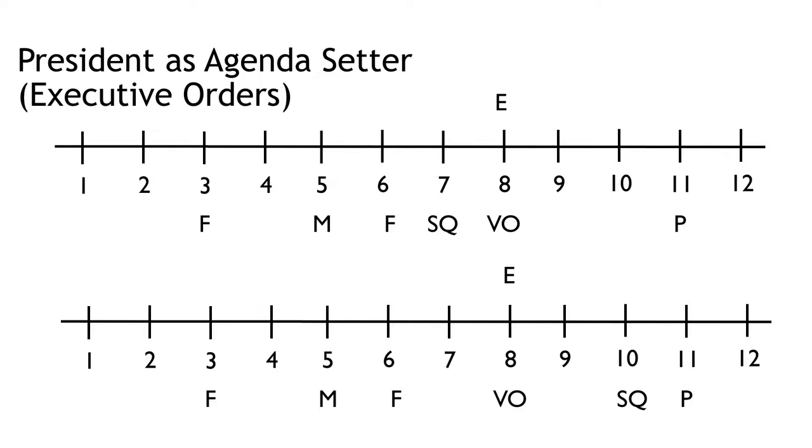In the top case, the president is moving the status quo from 7 to 8. This moves the policy closer to the president's preferred position. The president is made better off. The president, however, leaves it at the edge of the gridlock interval in order to keep Congress from passing a law that supersedes it. This is important because if the president moved the policy all the way to 11, then Congress would simply pass something that would move it back to 5, and the president would be worse off than if they had kept it at 8.